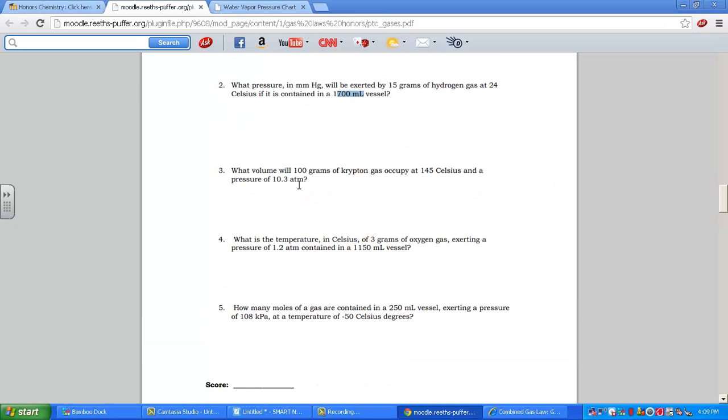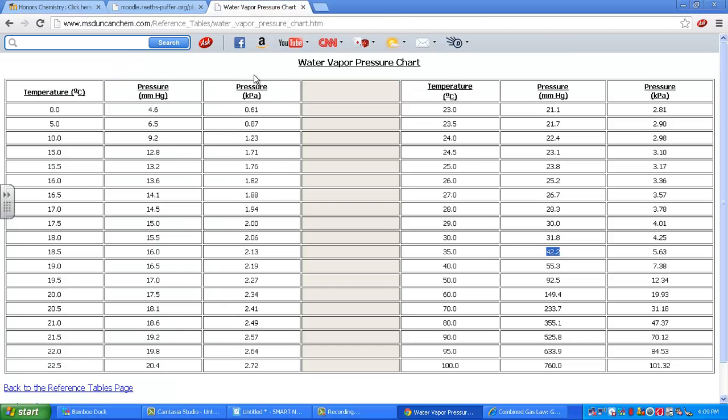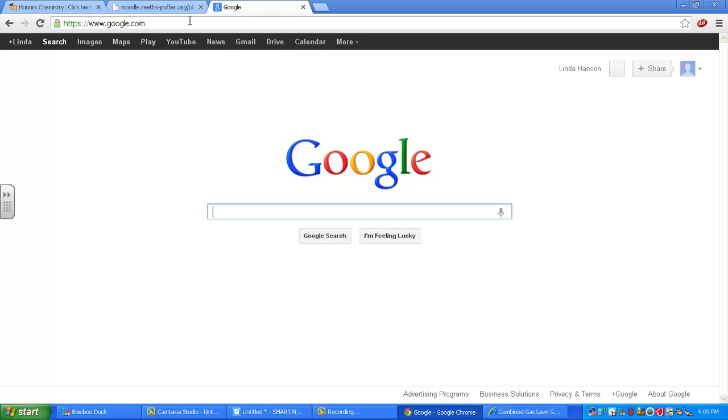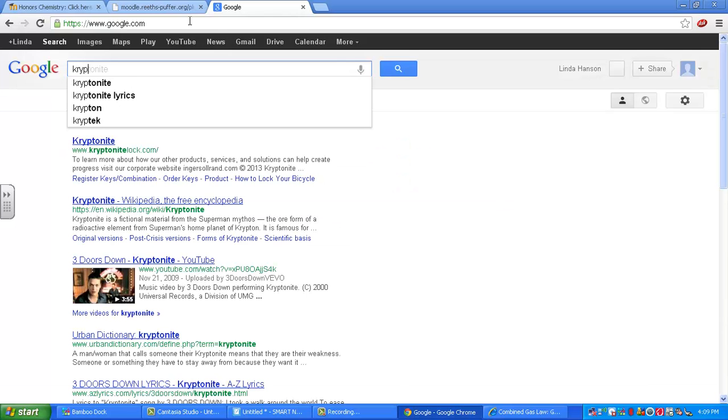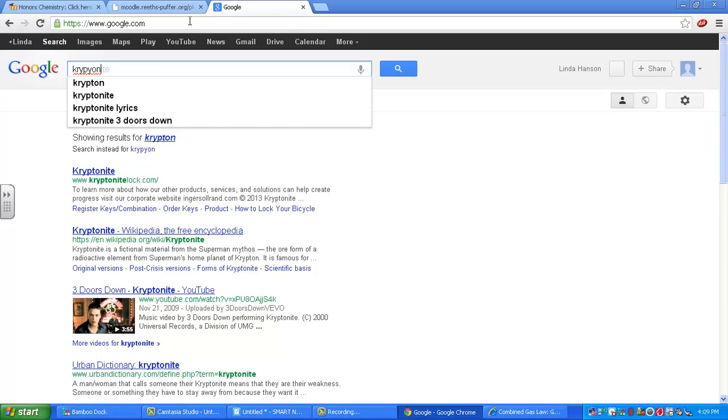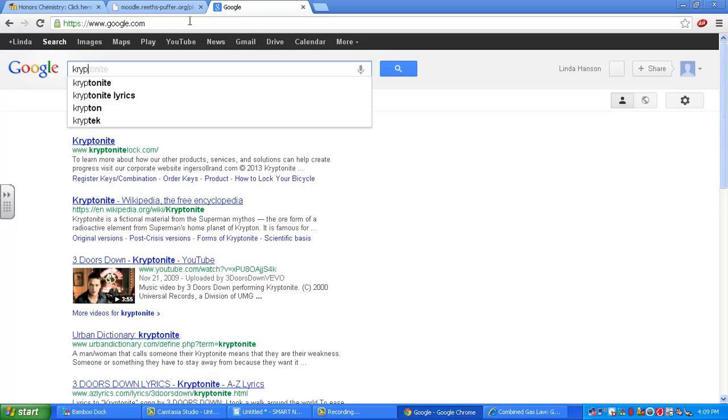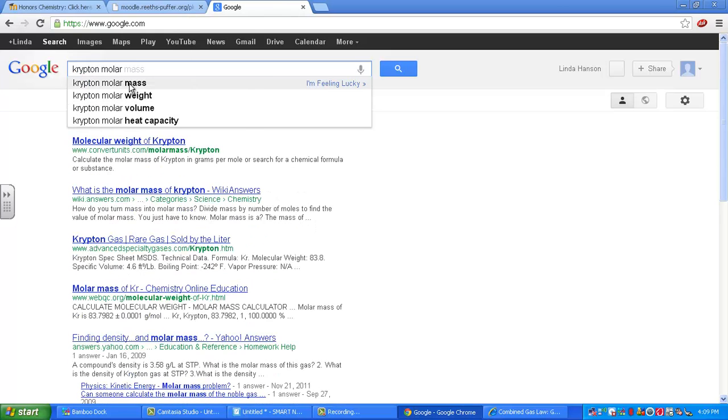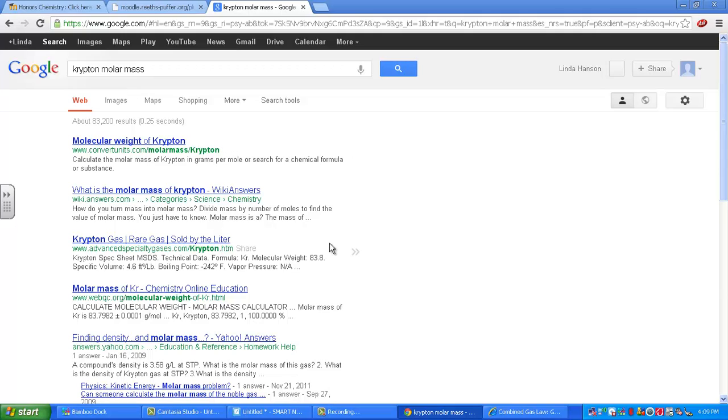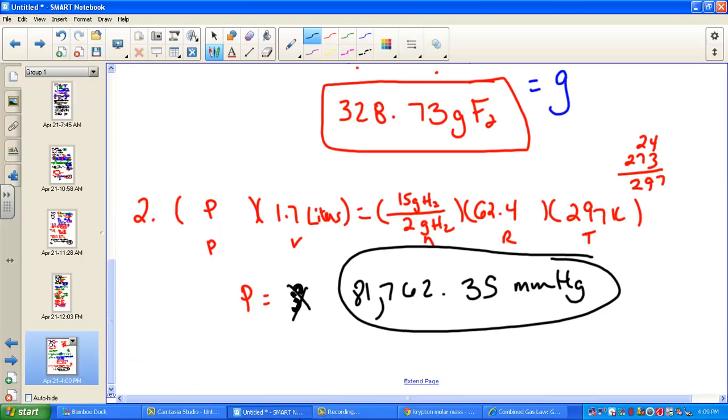Number three. Number three wants to know volume of 100 grams of krypton. That's a molar mass of krypton. 145 Celsius and a pressure of 10.3 ATMs. Let's get our parentheses ready. I'm going to need to Google molar mass of krypton. I don't have a periodic table in front of me. Do you see it? Ah, there it is. 83.8. 83.8. I didn't know that one by heart. Sorry.